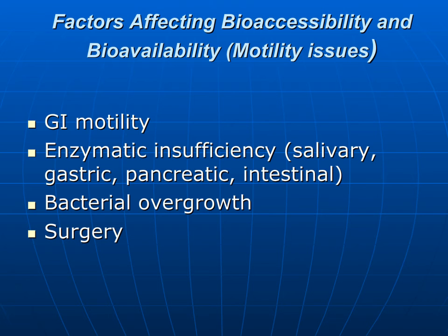GI motility can increase or decrease the absorption rate. Fat and protein are not absorbed as rapidly as simple carbohydrates. When we consume foods high in protein and/or fat, the motility of the gastrointestinal system slows down, so the nutrients are actually more available to the body because they are in contact with the villi and the microvilli for longer periods of time.